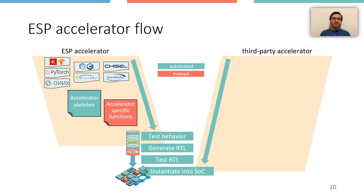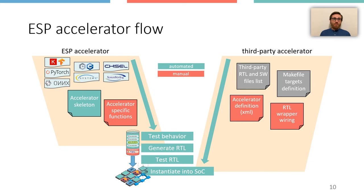On the right, instead, we have the main steps needed to integrate a third-party accelerator in practice. First, list all source files, hardware and software, then fill in a simple make file with the required make targets for RTL generation or software compilation.